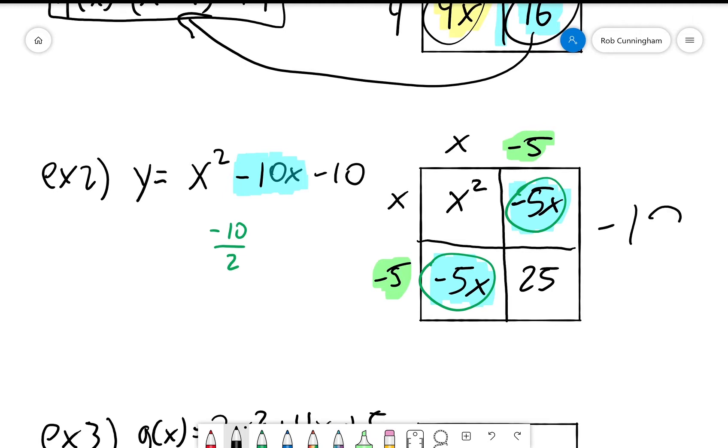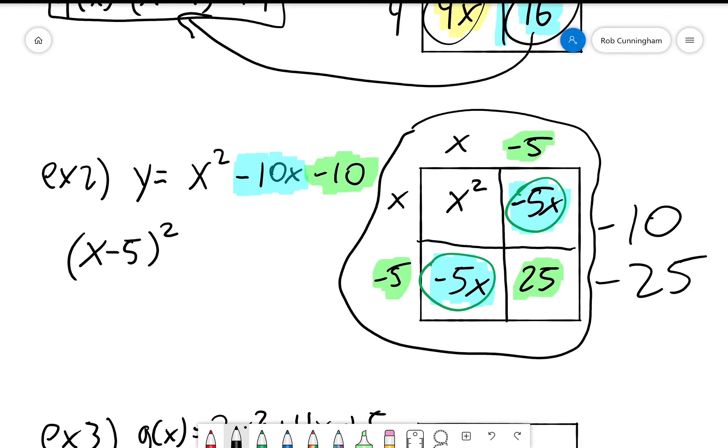Now we already have a minus 10 out here, right? That's that number right there. We just added 25. So just like last time, we're going to take away 25 to compensate. So what do we have? We have x minus 5 squared. That's this whole thing right here.